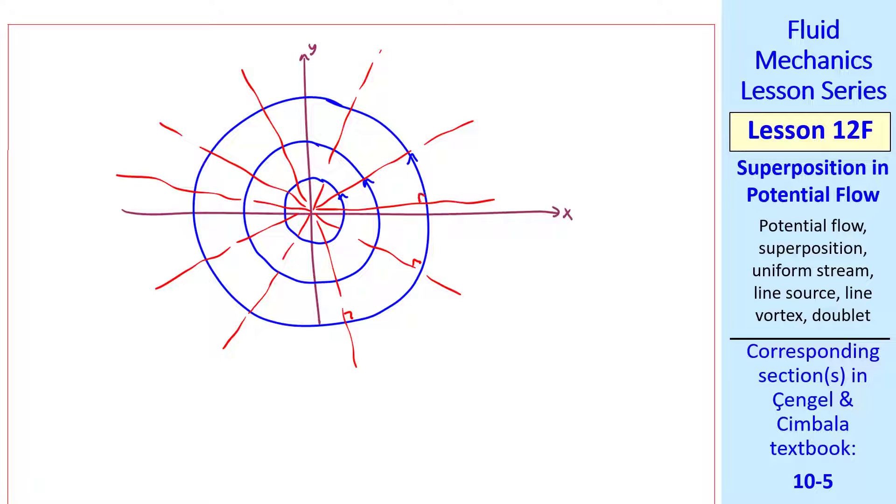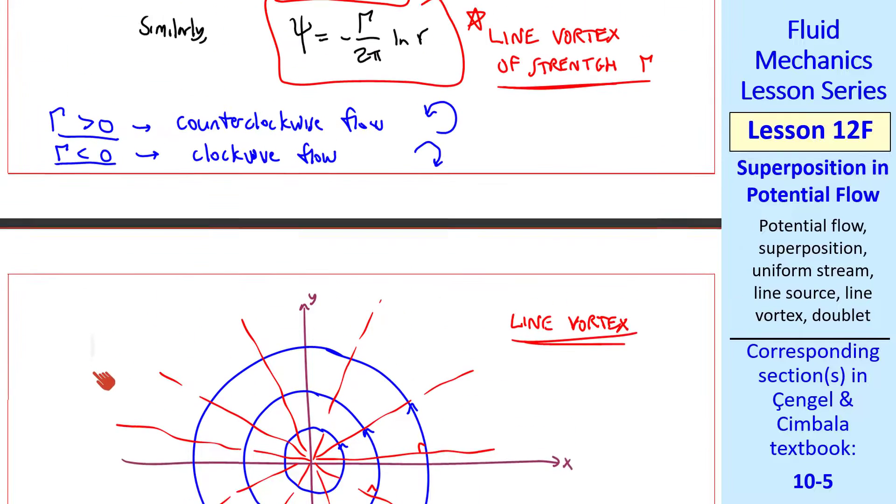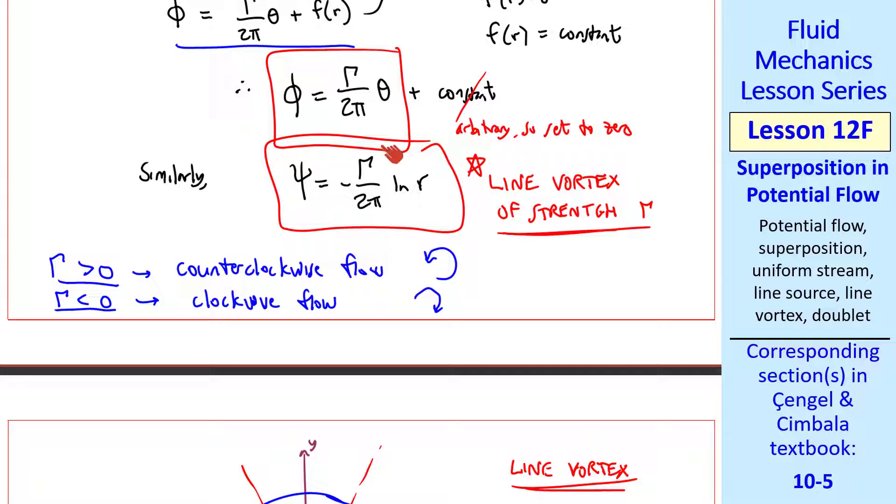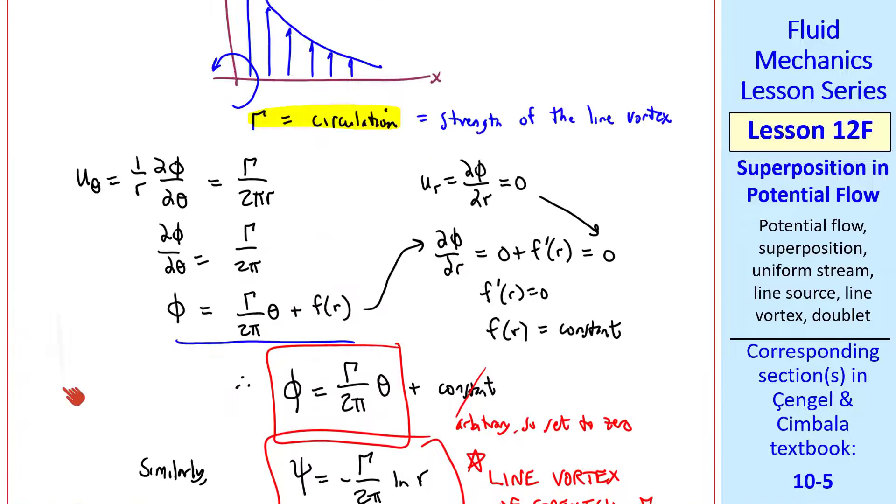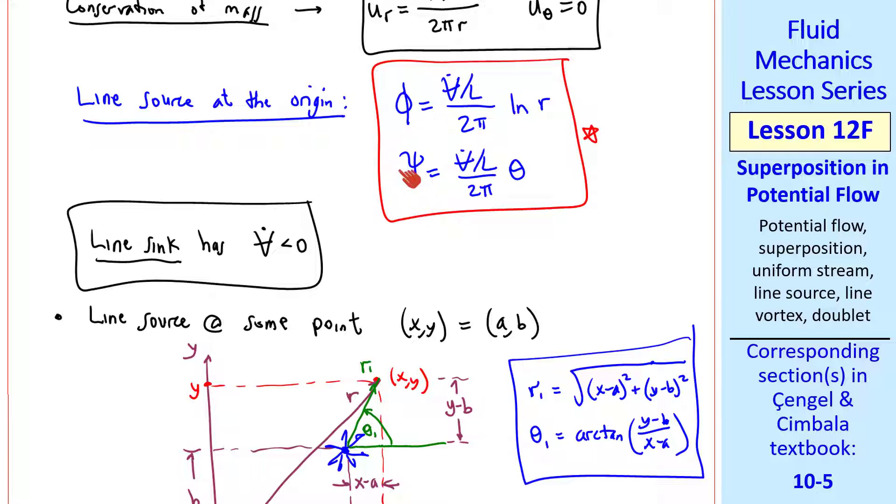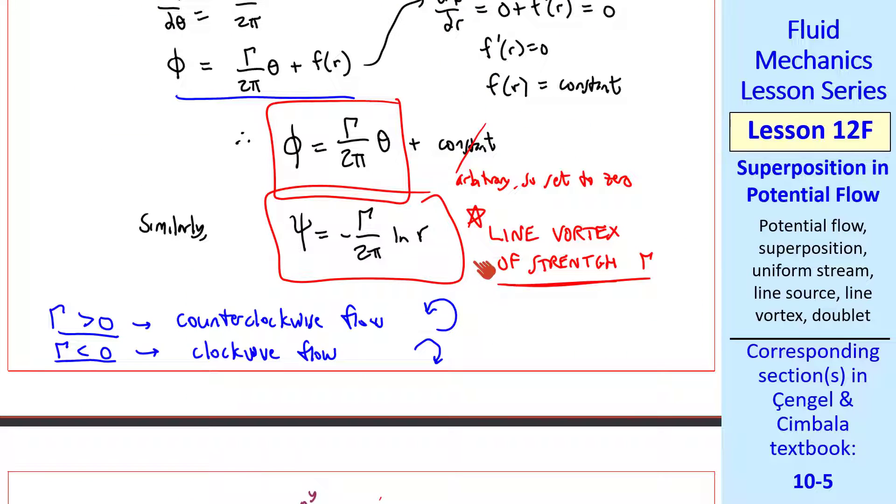Streamlines are just circles centered around the origin, and equipotential lines are rays emanating from the origin. Again, they intersect mutually orthogonally everywhere. The astute viewer may realize that this line vortex is very similar to the source, except that the equipotential lines and the streamlines are opposite. For the source, the rays were the streamlines, and the circles were the equipotential lines. This is also seen in the equations. These equations for a line vortex are quite similar to those we had for a source, except the equations for phi and psi are kind of backwards here, for the source, compared to the line vortex.